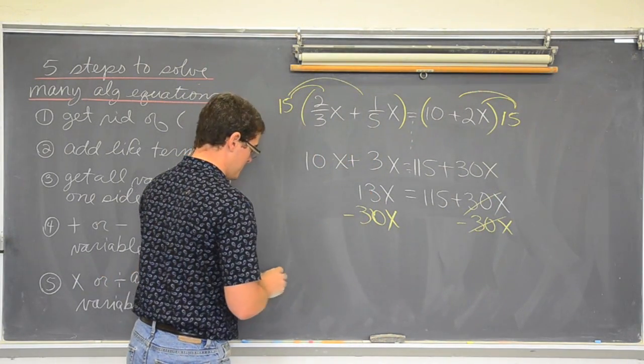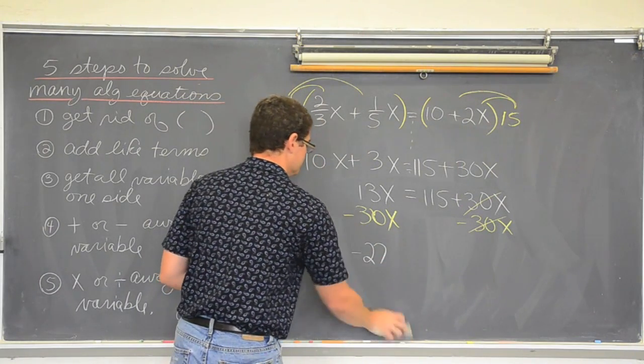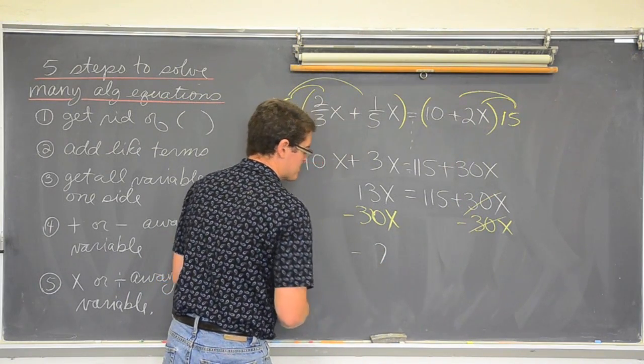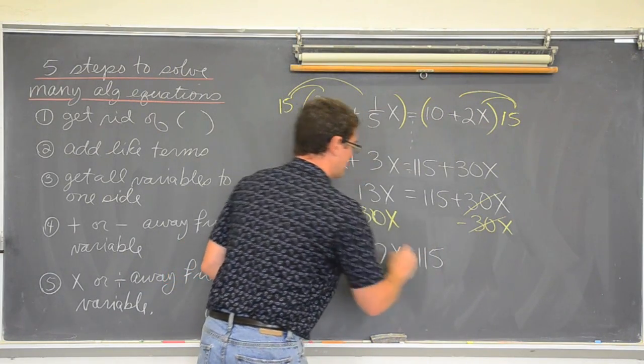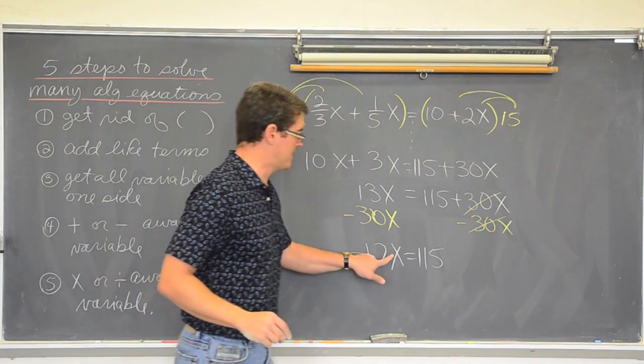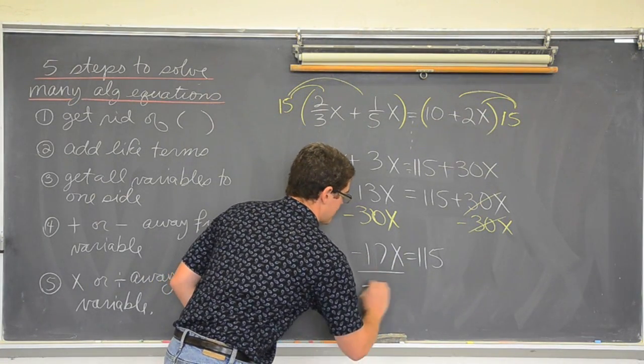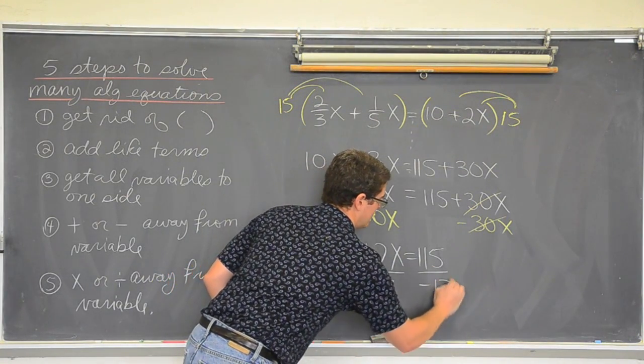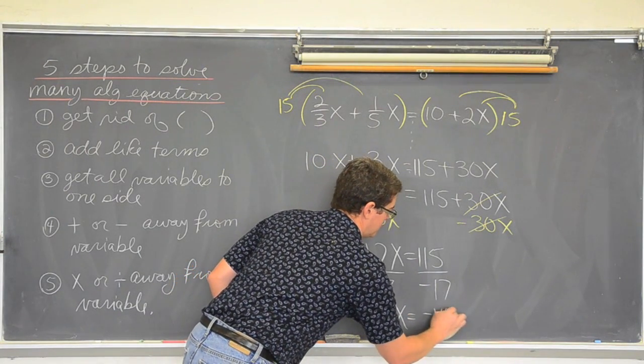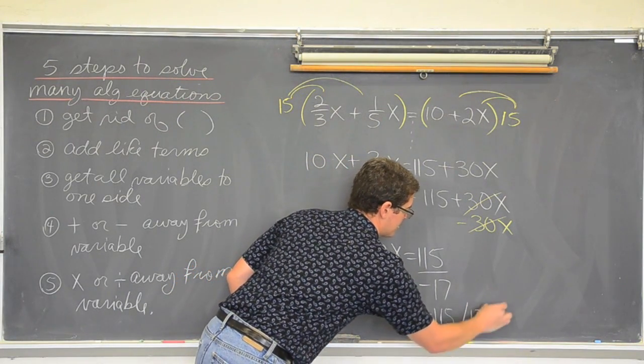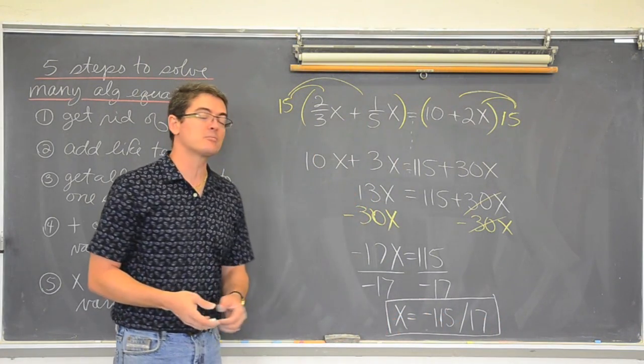13 minus 30 is 27. Negative 27. Let's try negative 17. x equals 150. And I am going to divide both sides by negative 17 because it is still with the x and it is touching. So, I am going to divide both sides by negative 17. And x equals negative 115 over 17.